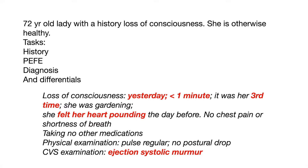You want to ask about loss of consciousness — ask all the questions so you can find out what happened before, during, and after the event. Then ask specific questions to help rule out your differential diagnosis. When you ask about cardiac symptoms, you can get some positive findings for aortic stenosis, because we have a triad: syncope, exertional dyspnea, and angina. Please do not forget to ask about these symptoms.